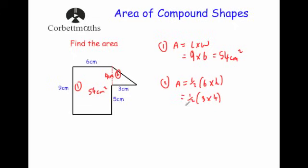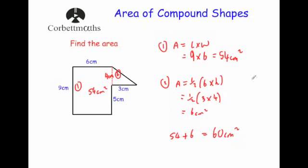3 times 4 is 12, and half of that is 6 centimeters squared for the triangle. Adding the areas together: 54 plus 6 equals 60 centimeters squared for the whole shape.